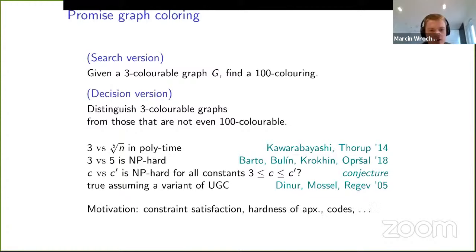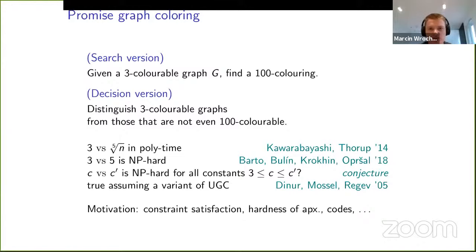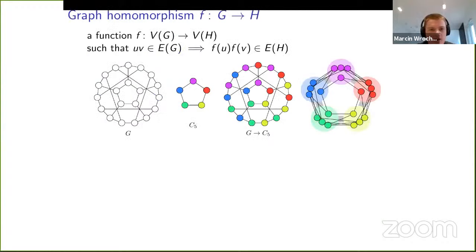The motivation for studying these kinds of problems is obviously to solve them — problems where you have to satisfy discrete constraints. More generally, we'd like to understand what kinds of approximation are possible, so hardness of approximation. This field of computer science is related to many areas of mathematics, such as coding theory. The same motivations apply to a more general problem: instead of coloring, we look at graph homomorphisms.